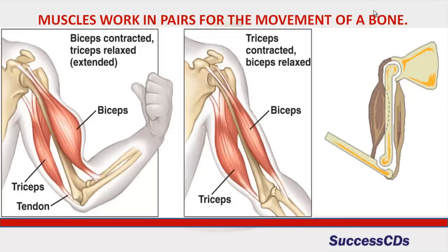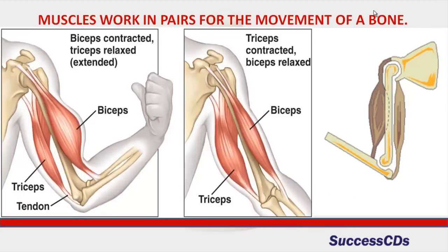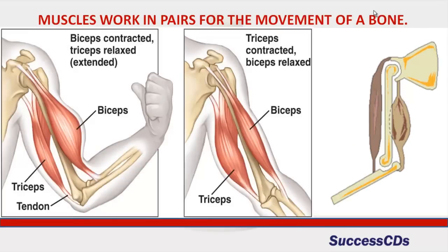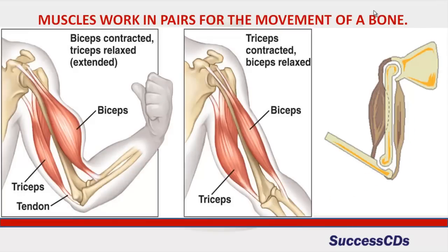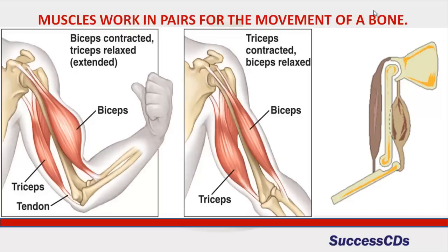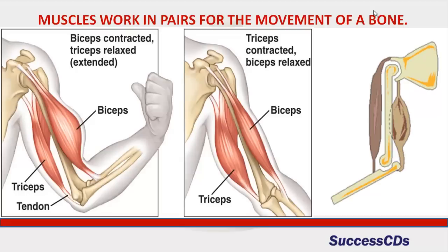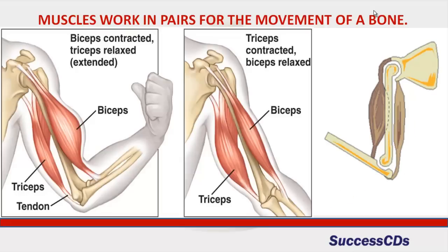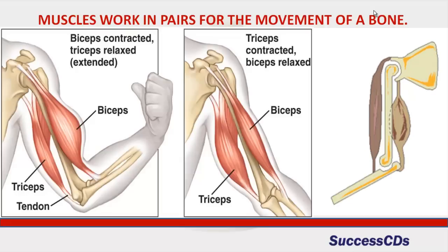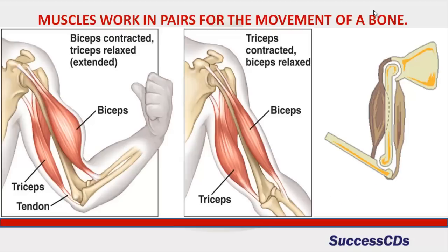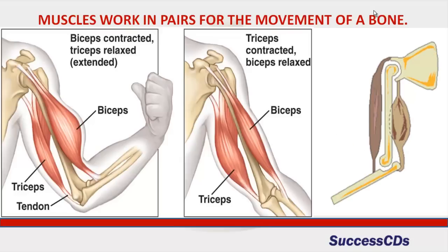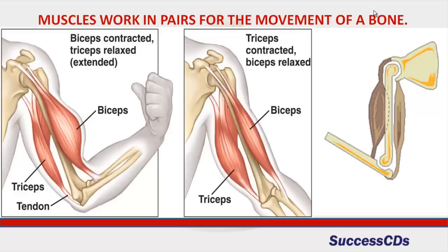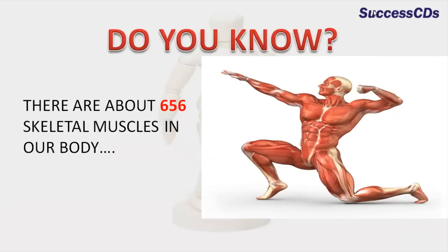Muscles work in pairs for the movement of a bone. When one muscle contracts, the bone is pulled in its direction and the other muscle relaxes. Then the relaxed muscle contracts and pulls the bone back to its original position while the first muscle relaxes.